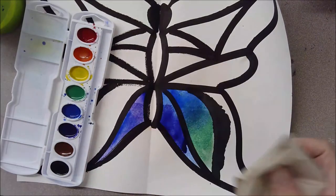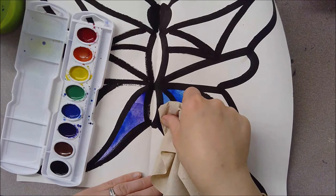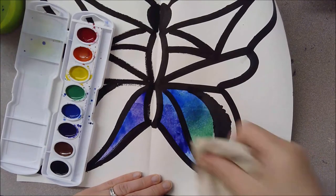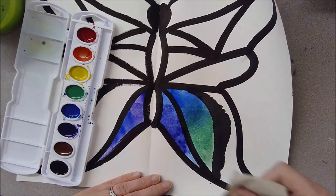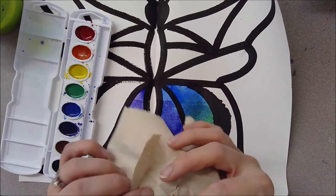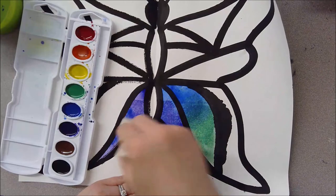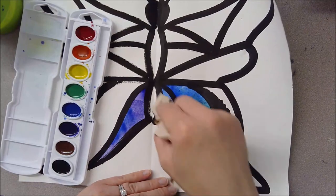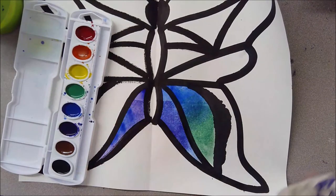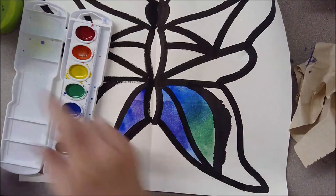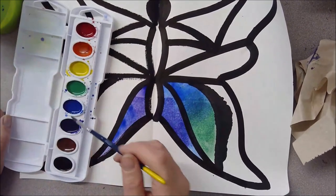The solution is to take some paper towel and just dab it - so push down, lift up, push down, lift up. That is going to soak up some of it. You never ever want to take this and just rub with it because it will just make a mess. So I'm just pushing down and lifting up gently and that will make it a lot lighter and less muddy looking but it won't ruin what I've done.